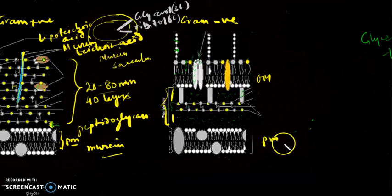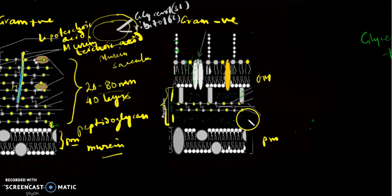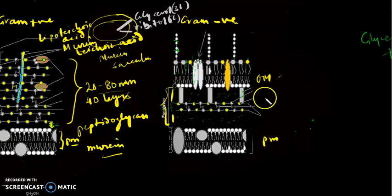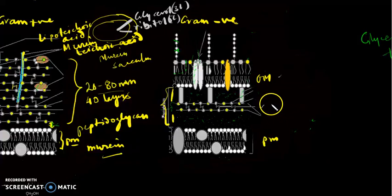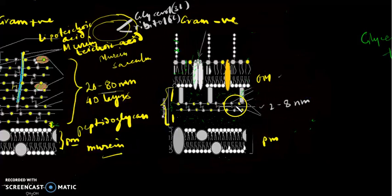Now let us talk about the gram negative cell wall. The gram negative cell wall is more complex than the gram positive because it contains two distinct layers: the outer membrane and a peptidoglycan layer, which is very thin — nearly 2 to 8 nanometers in thickness, as compared to 20 to 80 nanometers — and nearly two to three layers of peptidoglycan chains are linked by tetrapeptide side chains.